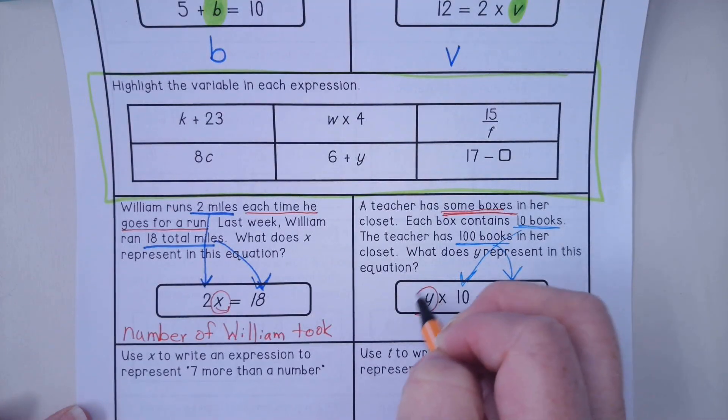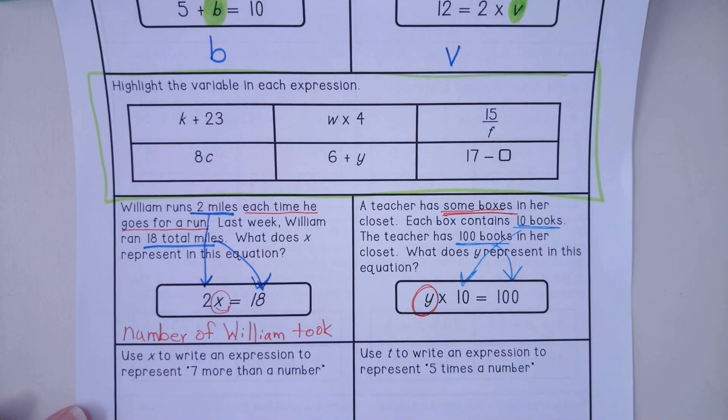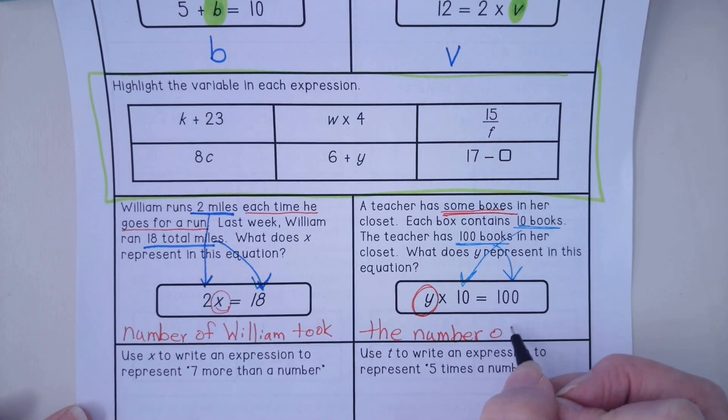What does the y represent in this equation? So the y represents the number of boxes.